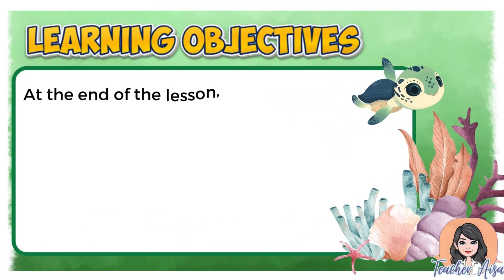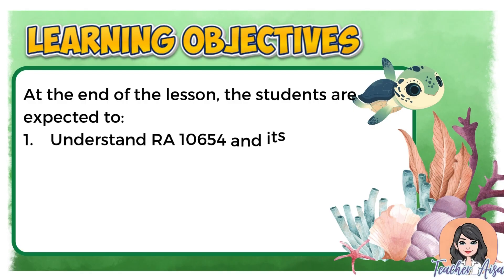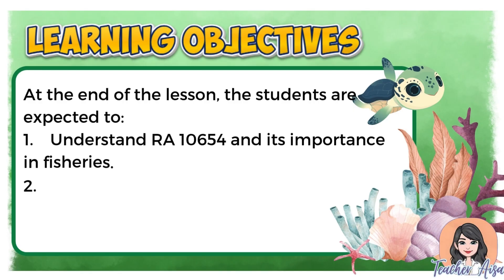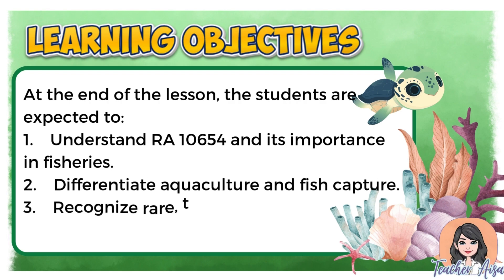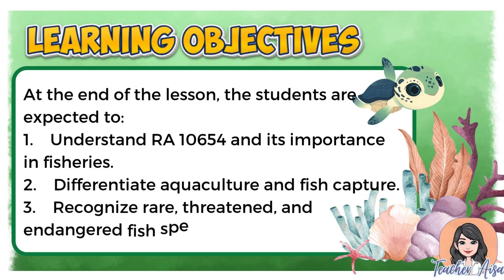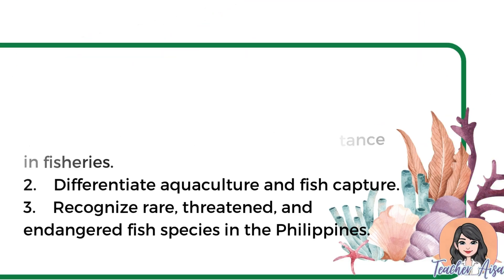At the end of the lesson, the students are expected to: 1. Understand RA 10654 and its importance in fisheries. 2. Differentiate agriculture and fish capture. 3. Recognize rare, threatened, and endangered fish species in the Philippines.